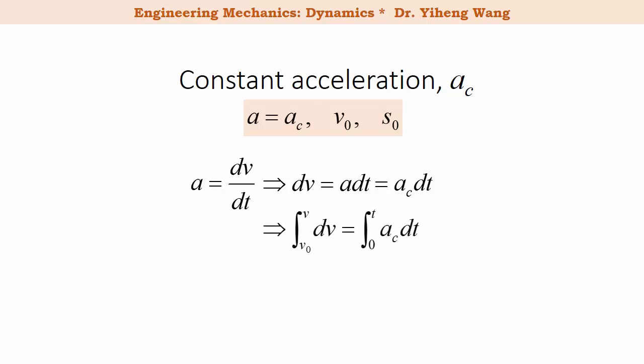Again, choose the proper integration limits. On the left side we integrate from the initial velocity v₀, and on the right side we integrate from time zero. And after integration we get v minus v₀ equals ac times t, and it can be rewritten as v equals v₀ plus ac times t. This equation allows us to calculate the velocity of the object at any given time during the rectilinear motion with constant acceleration ac.